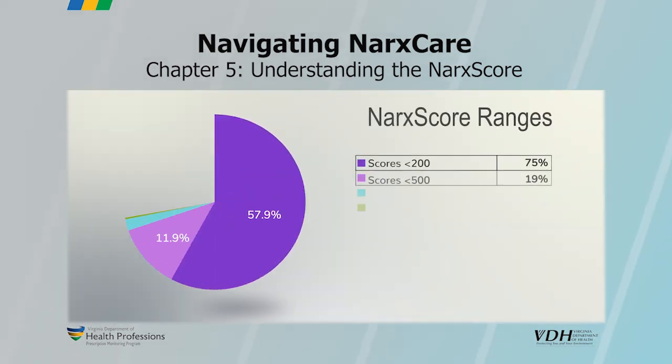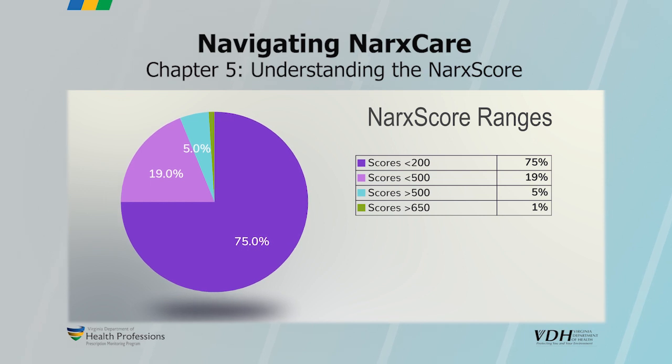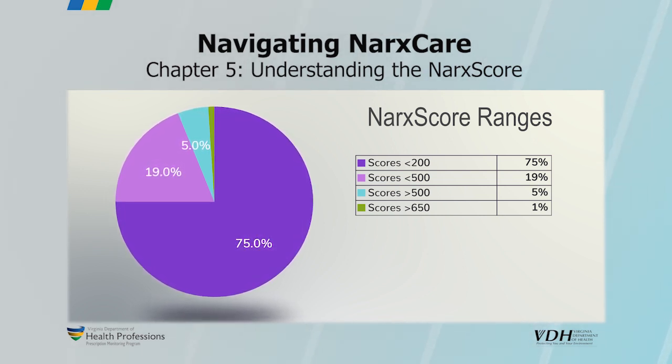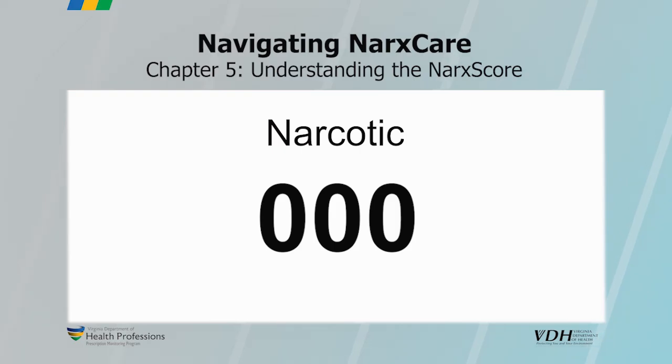75% of NARC scores are below 200. Only 5% are above 500 and only 1% are above 650. Typically, the higher the NARC score, the higher the risk. However, the most important opioid NARC score may be zero. This score indicates that your patient is opioid naive and that opioids should only be prescribed or dispensed if absolutely necessary and in the lowest possible dose for the shortest possible time.